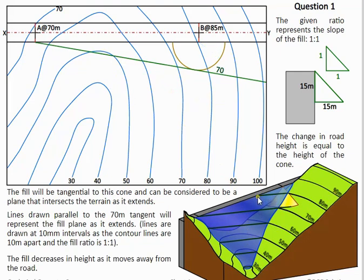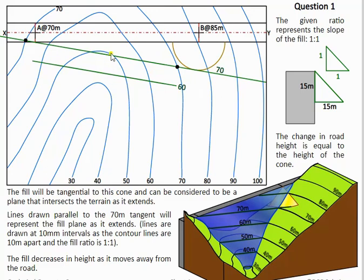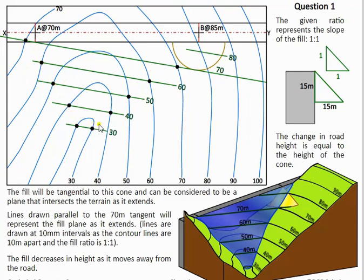We draw lines parallel to this 70 line to show where it intersects with all the contour lines going down. All these green lines are parallel to the 70 line. There is fill in this section, so instead of stopping at the 70 point we continue inward to find how far in it goes. Next we draw in our 60 height line — the distance here is the side slope multiplied by the distance between contour lines, which is 10 by 1 giving 10 mils. Then we mark off 50, 40, and 30.